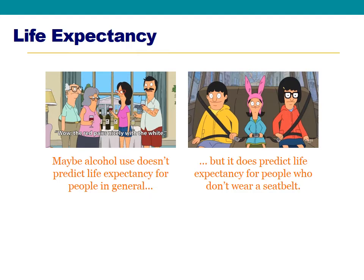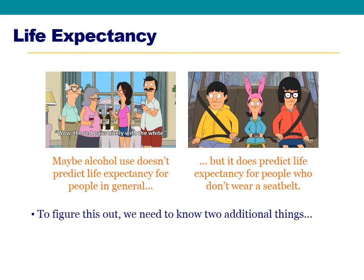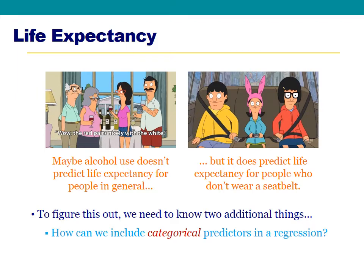Today we're going to talk about how to test whether the relationship between two continuous variables depends on which group you're in. Before we can do that, we need to know two things: first, how to include a categorical variable as a predictor in regression — since all our examples so far have used only continuous predictors — and eventually how to include an interaction term in our regression equation.